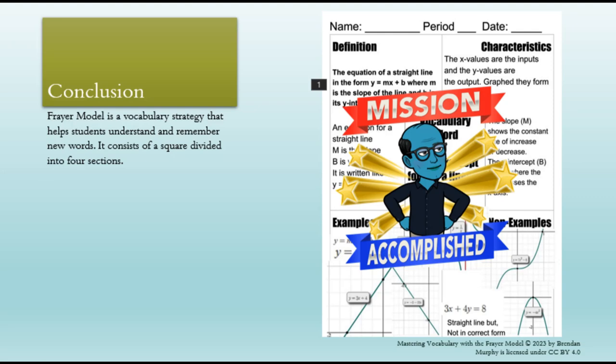Then click on the template for the Frayer model, make a copy of it, put your word right in the middle, and fill out the rest of the template. Online preferably, but if you struggle with that, you are welcome to print it out and do it by hand. Thank you so much.